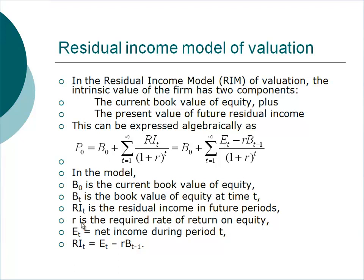The key definitions: B0 is the current book value of equity; Bt is book value at time t; RIt is residual income in future periods; r is the required rate of return on equity; Et is net income during period t. Residual income equals earnings minus the product of the cost of equity and the beginning book value of equity. It may look intimidating, but examples will make it much more understandable.